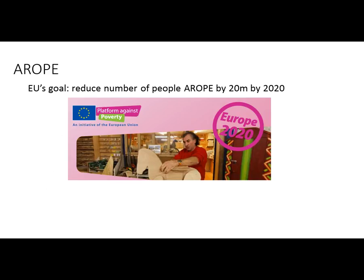The European Union's current strategic plan, called EUROPE 2020, set a goal to reduce the number of people at risk of poverty or social exclusion by 20 million by the year 2020. This target was set in 2010. They are not currently on track to meet this target, primarily because of the global financial crisis and the extensive recovery work required afterward, with only a few years left before 2020.